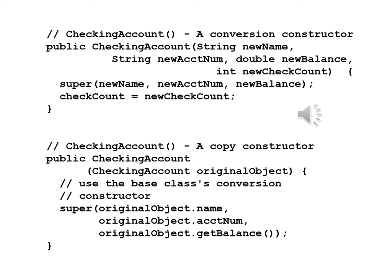The conversion constructor: public CheckingAccount, String newName, String newAccountNumber, double newBalance, int newCheckCount. We'll call super(newName, newAccountNum, newBalance) because these properties belong to the base class, then checkCount equals newCheckCount. The copy constructor: public CheckingAccount, CheckingAccount originalObject. We'll use the base class's conversion constructor — super(originalObject.name, originalObject.accountNum, originalObject.getBalance) — setting all three base class properties at once.